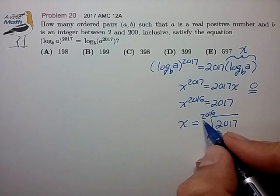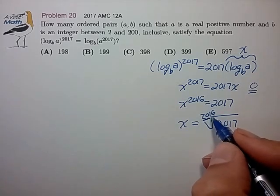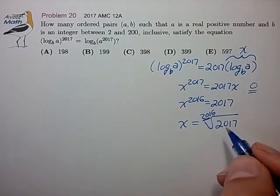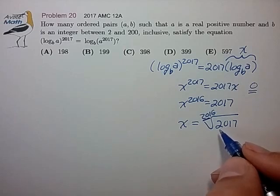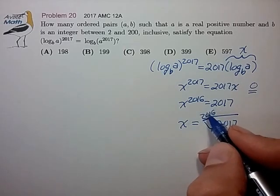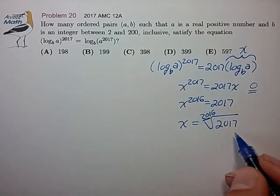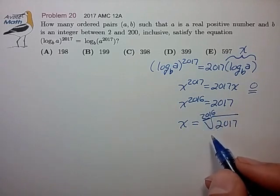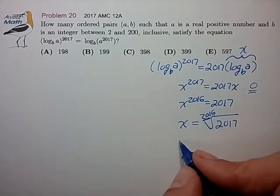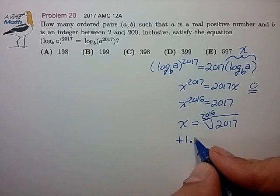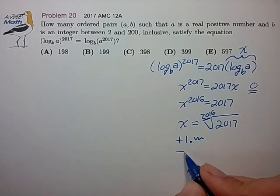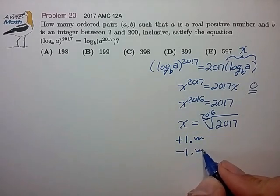X is equal to the 216th root of 2017. Now I have to be careful that since 2016 is an even number, this actually generates two root values, a positive and a negative root. Because this is such a high number, this expression equals something very close to one. So the two root values here are plus one with a little bit of change, and minus one with a little bit of change.